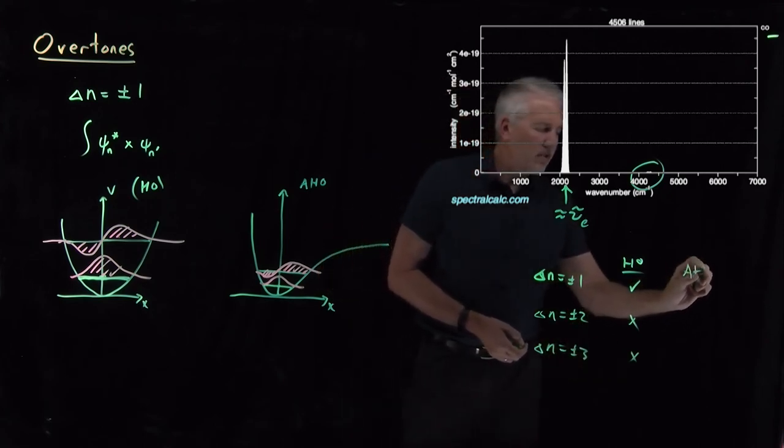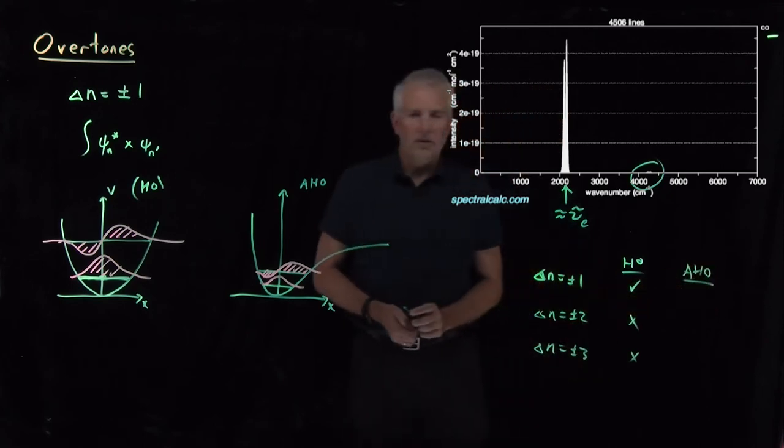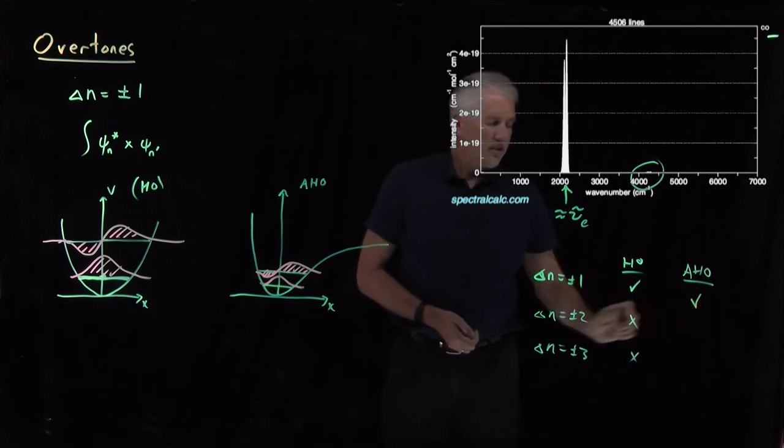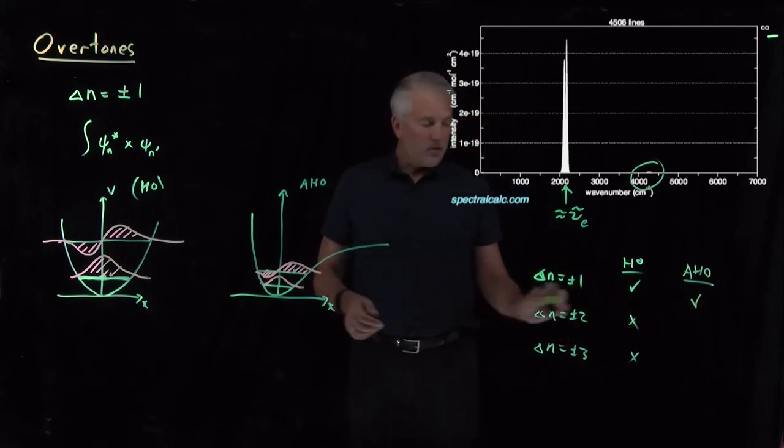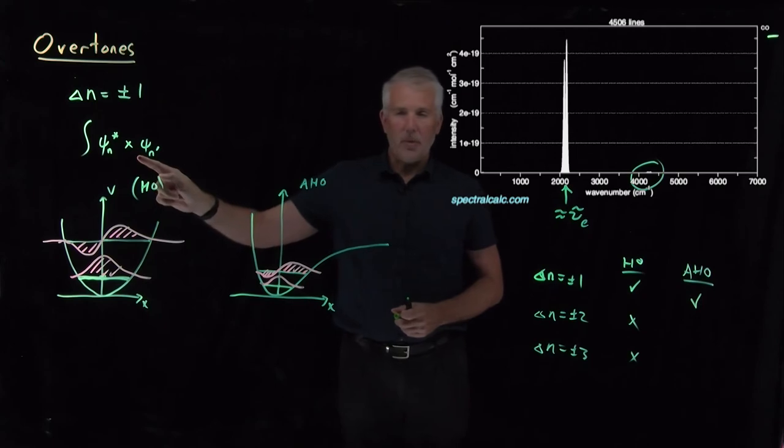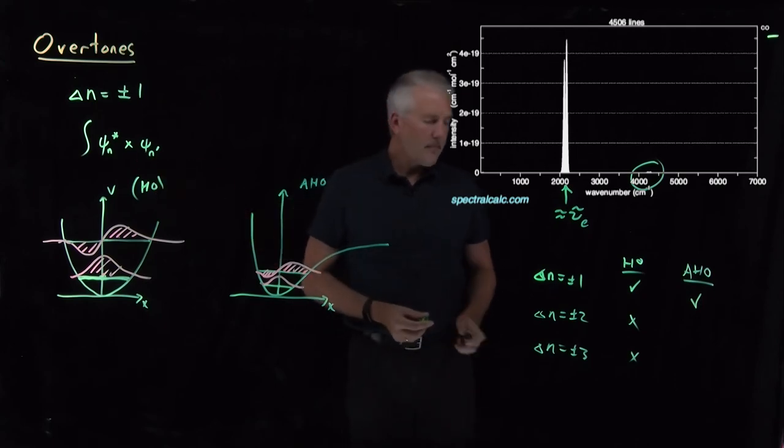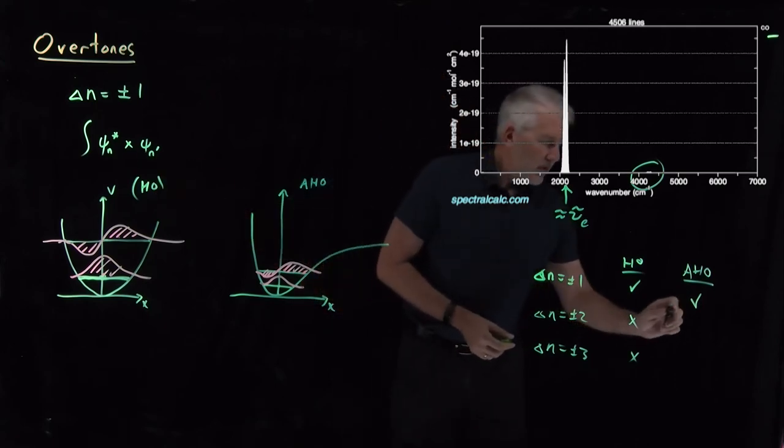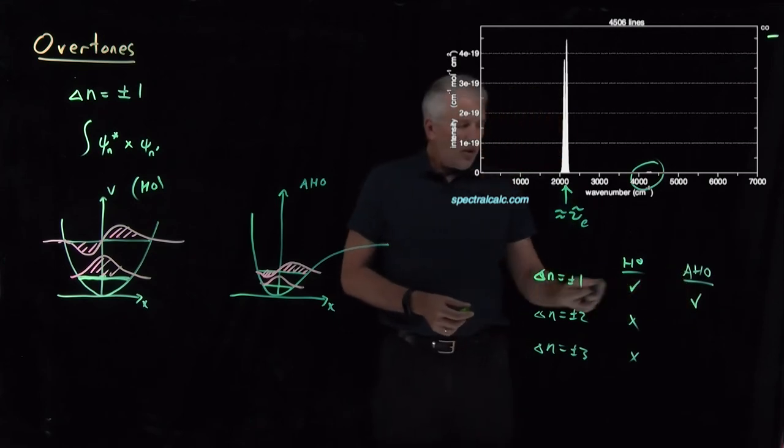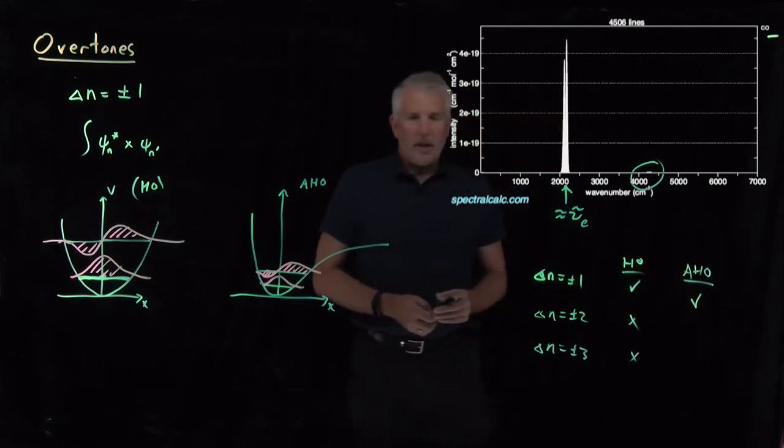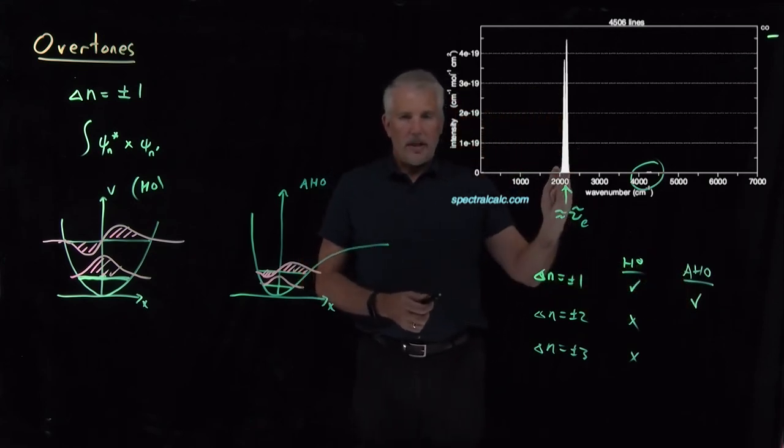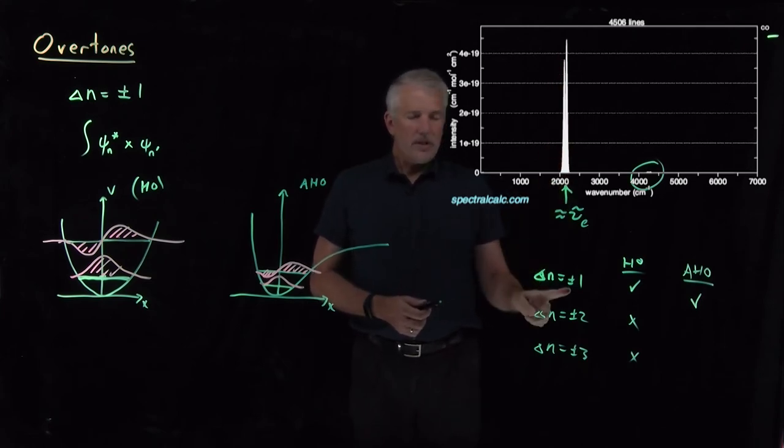For the anharmonic oscillator, what we find when we do those integrals, certainly plus or minus 1 is still allowed. Those integrals are still non-zero for the same reason they were for the harmonic oscillator. So that means either perfectly harmonic or anharmonic oscillators can absorb energy at the fundamental vibrational frequency or slightly redshifted from that when they change their vibrational state by 1. But when they change their vibrational state by 2, harmonic oscillator wouldn't absorb any light.